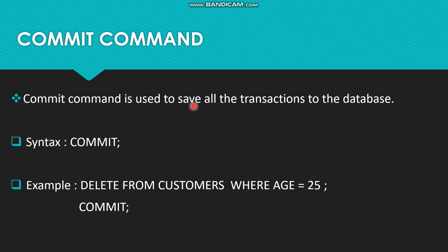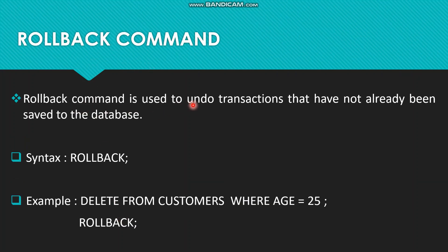The COMMIT command is used to save all the transactions to the database. The syntax is simply: COMMIT; — used alongside DML commands. For example, a DML command like DELETE FROM customer WHERE age = ... followed by COMMIT saves those changes. ROLLBACK is used to revert the transaction back to the first position — the point from where we started.